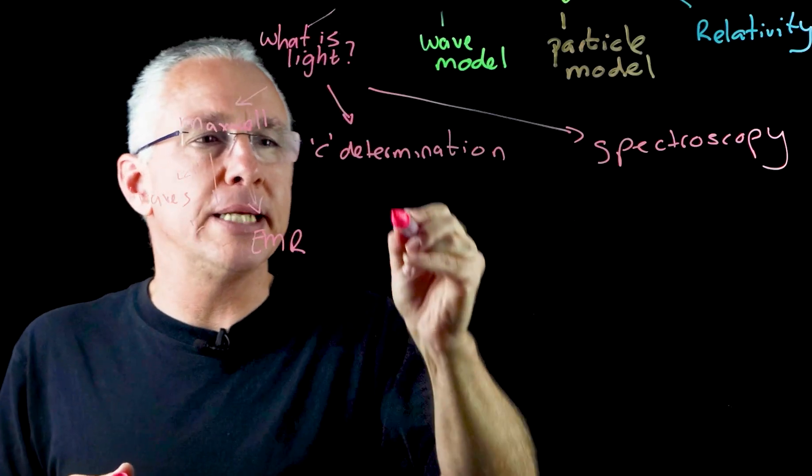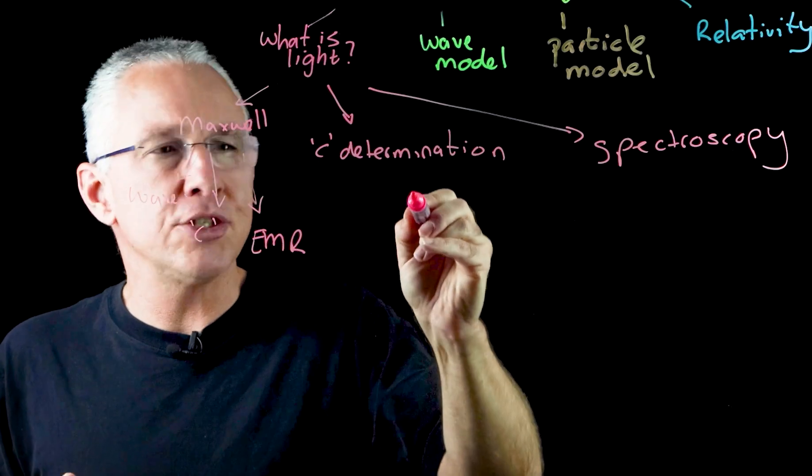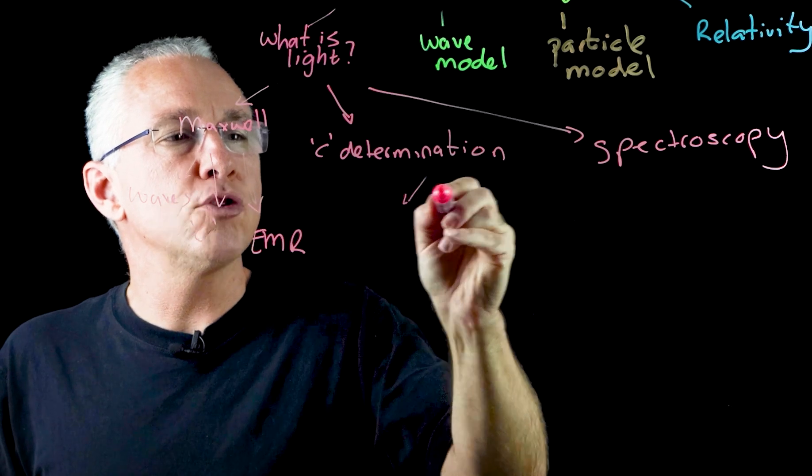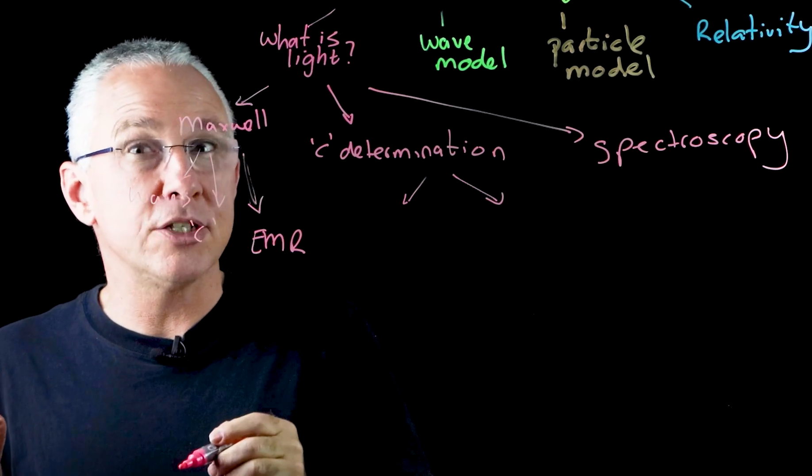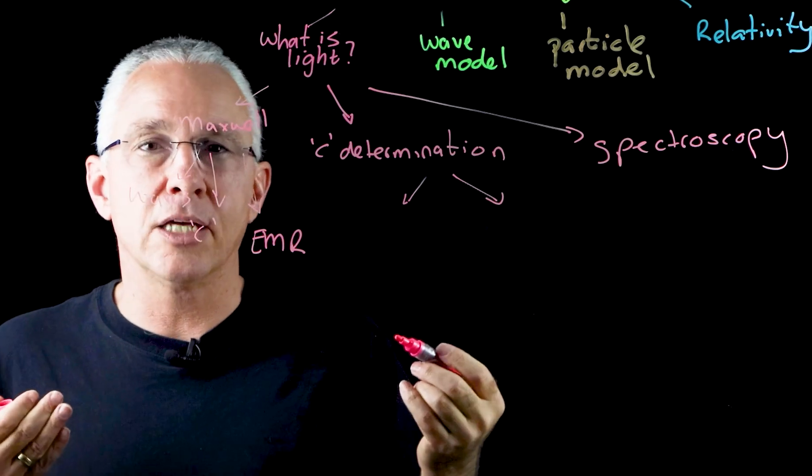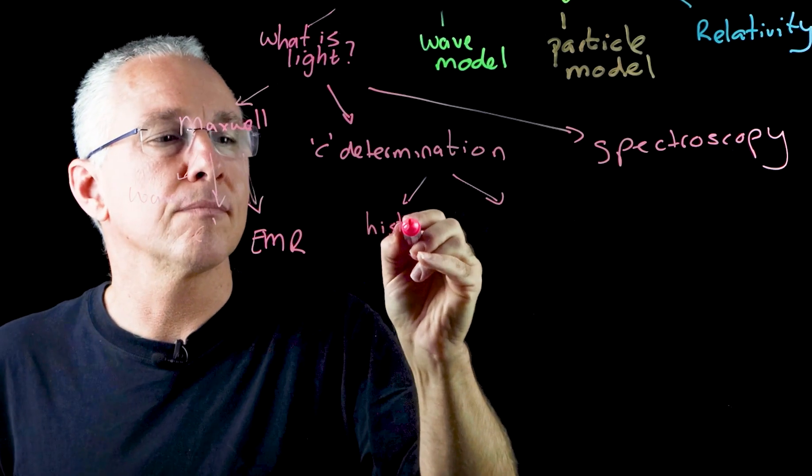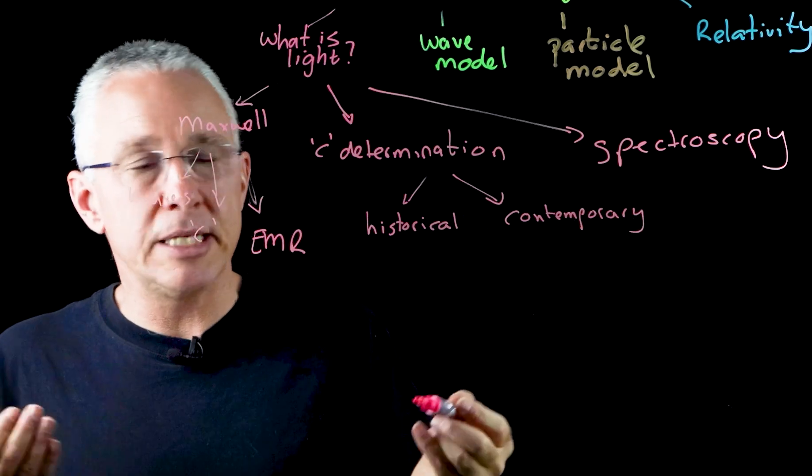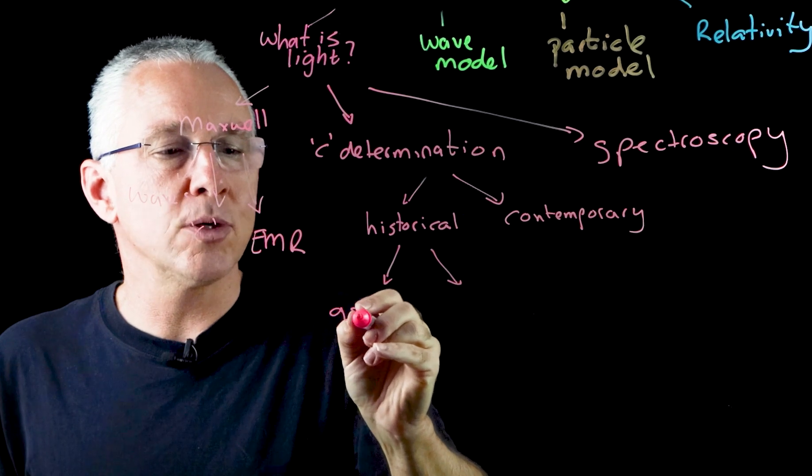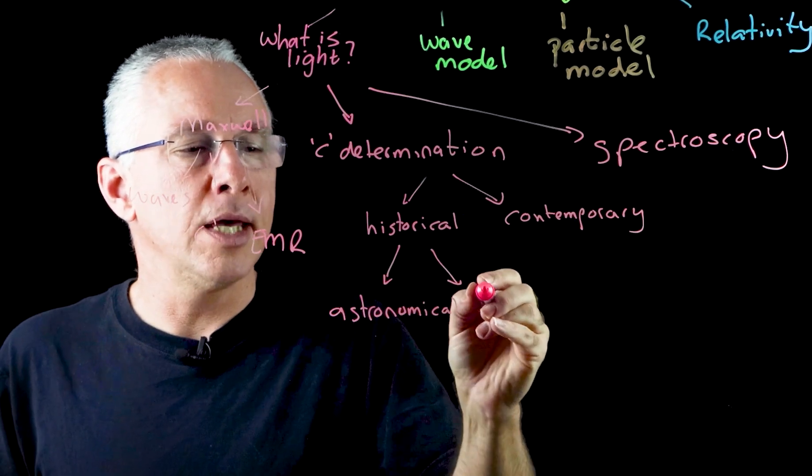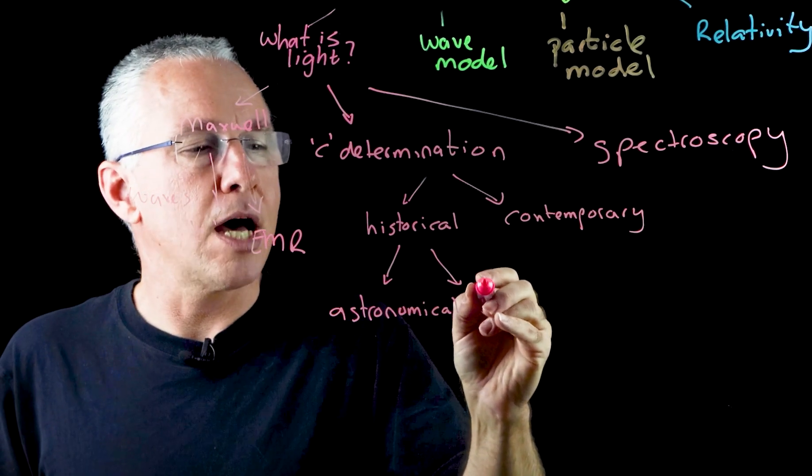The next aspect is the determination of c. Now the determination of c is done in two fashions. The first aspect is to understand that we have an historical analysis and a contemporary analysis. Now historically, the speed of light is determined one of two ways. One is astronomical, and the other is time of flight.